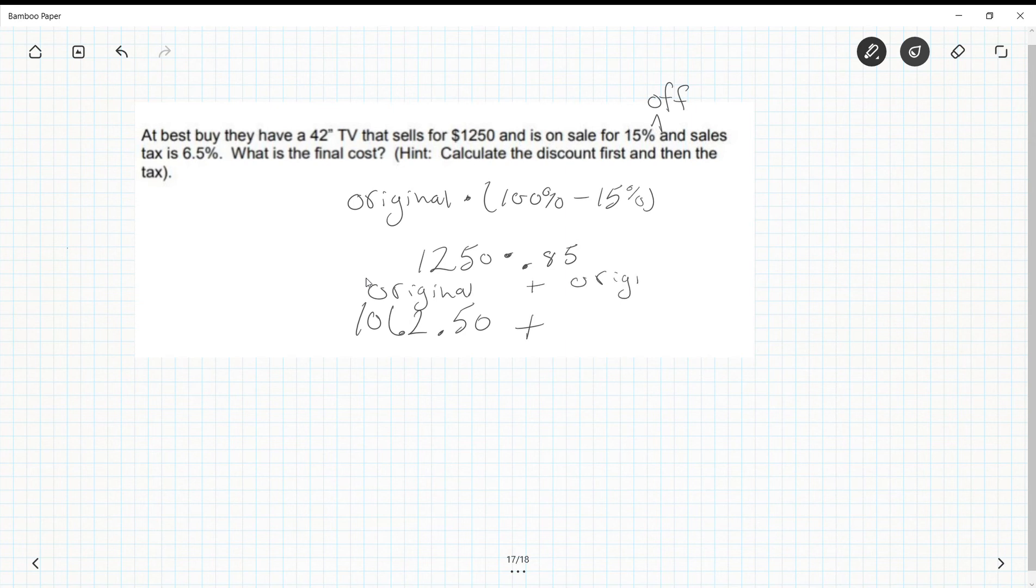Notice how we're still turning our percents into decimals. So the original again now is the $1062.50. You can think of taxes kind of like a markup, so you can use the same type of setup. And the tax is 6.5%, so decimal point to the left one two: 0.065. And that comes out to be $69.06. And if I add these two pieces together, I get $1131.56. That is the cost after we take our discount and then add the tax onto it.